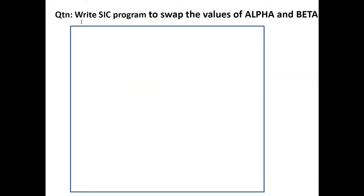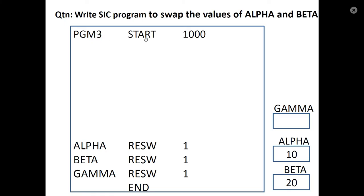The third question is: write a SIC program to swap the values of alpha and beta. Program 3, start 1000, end statement. We declare two variables alpha and beta, and one temporary variable gamma. Alpha is RESW 1 — assume garbage value 10. Beta is RESW 1 — assume garbage value 20. Gamma is RESW 1 — one temporary memory location.